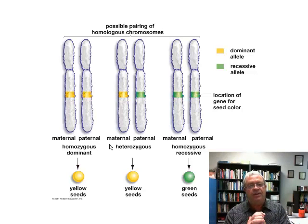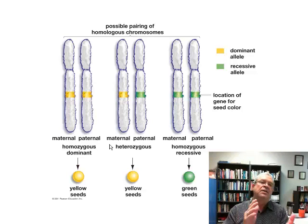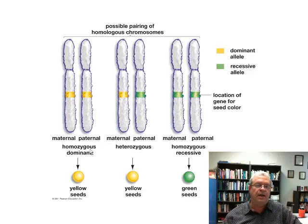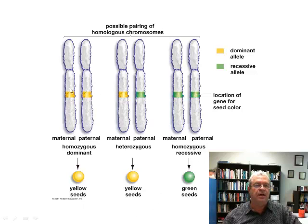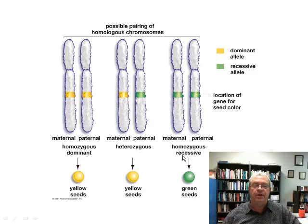Some plants had the two yellow alleles, some had the two green alleles, some had one green and one yellow. He discovered that having two yellow alleles produced yellow seeds, having a yellow and a green produced still yellow seeds, and having two green alleles produced green seeds.